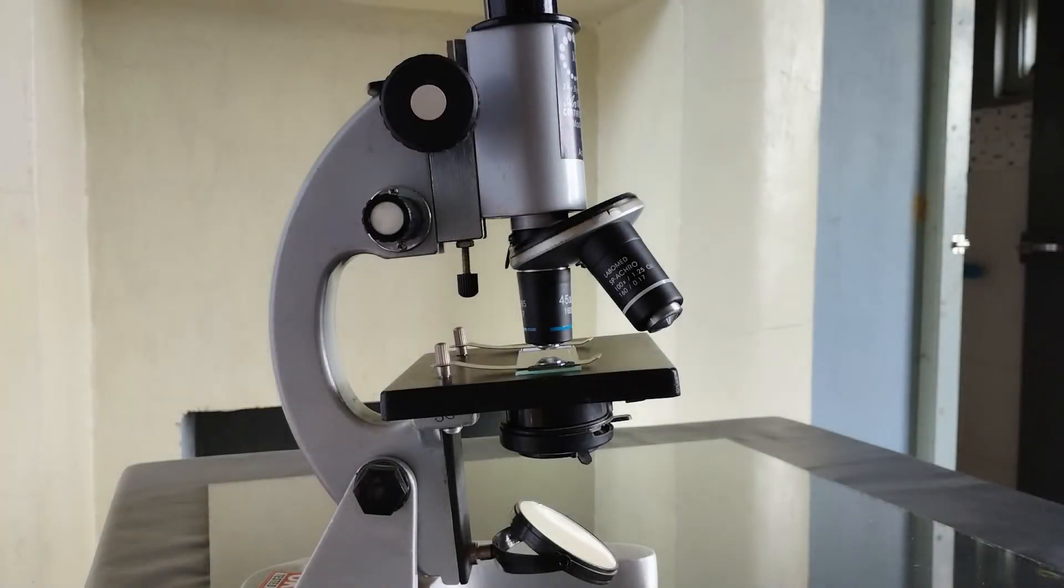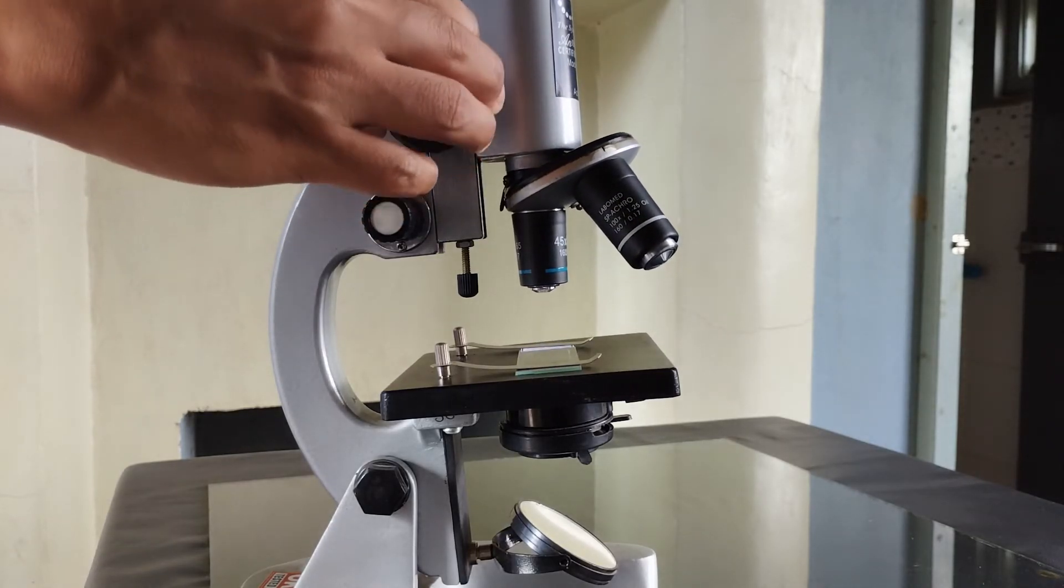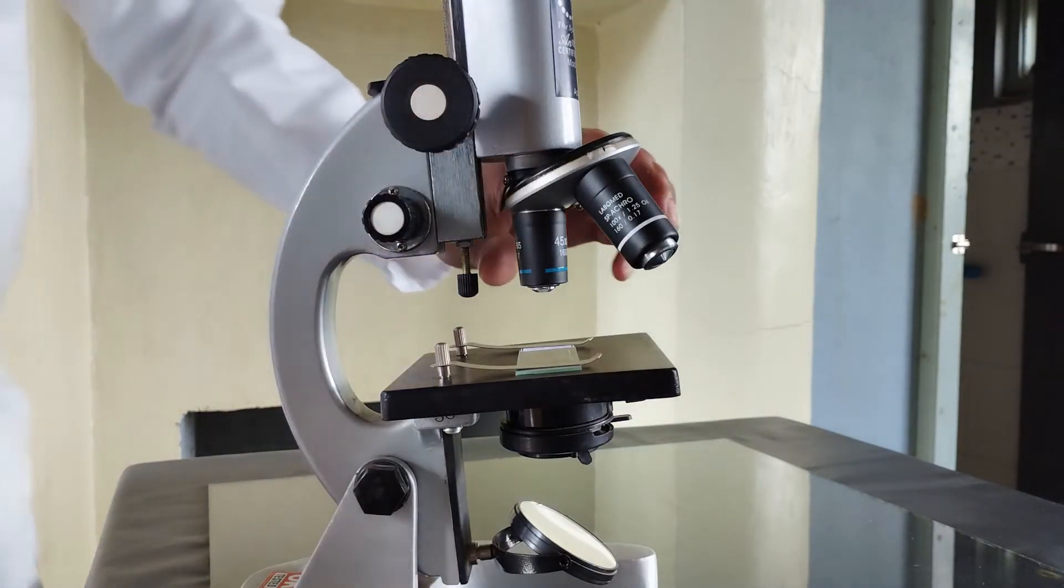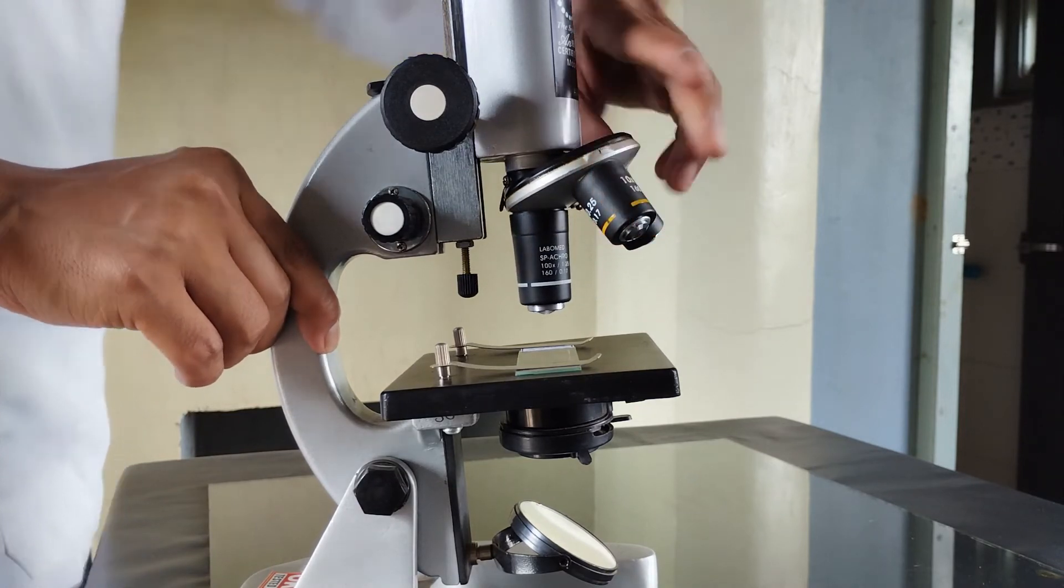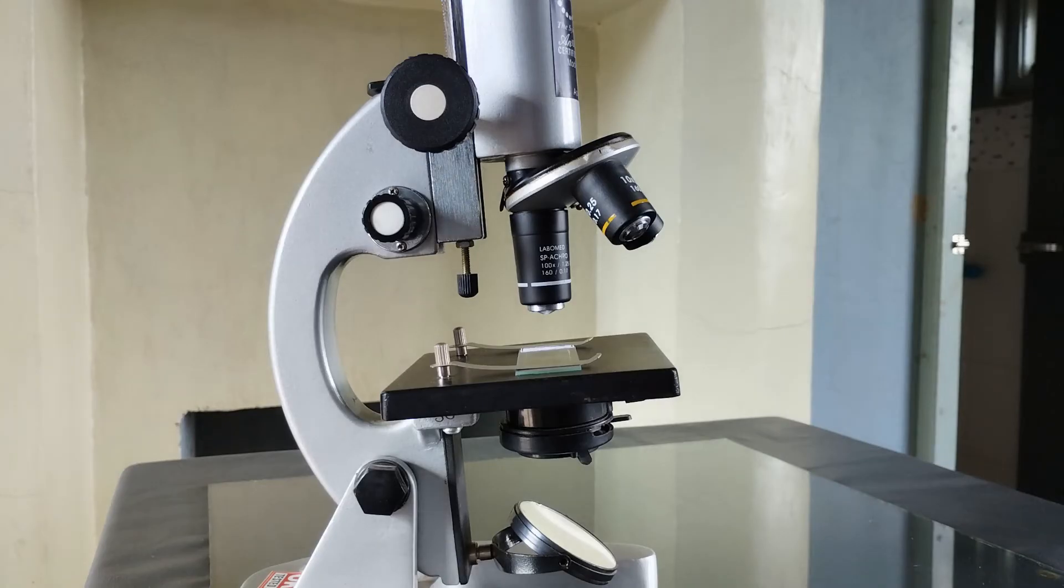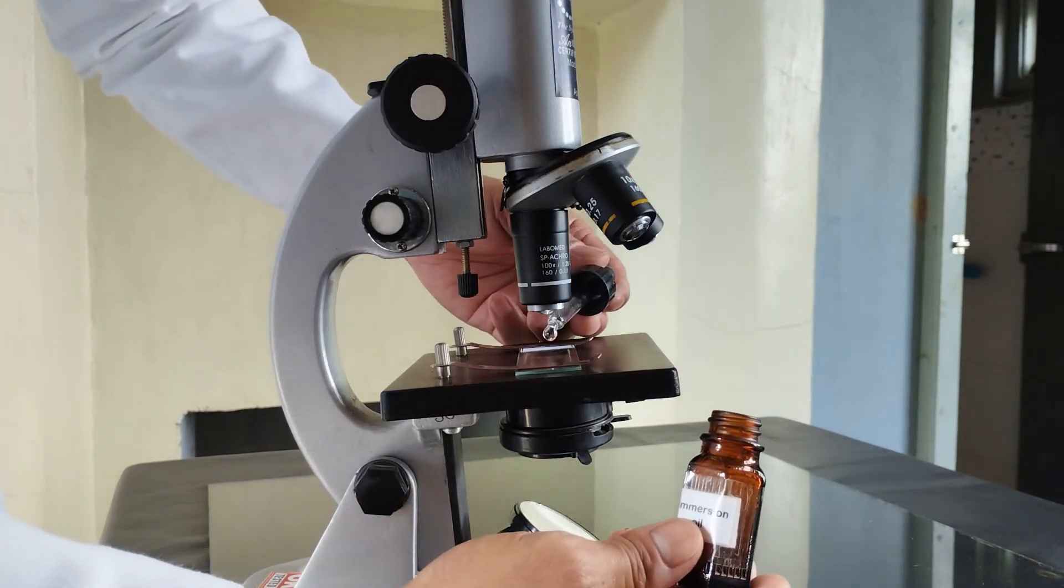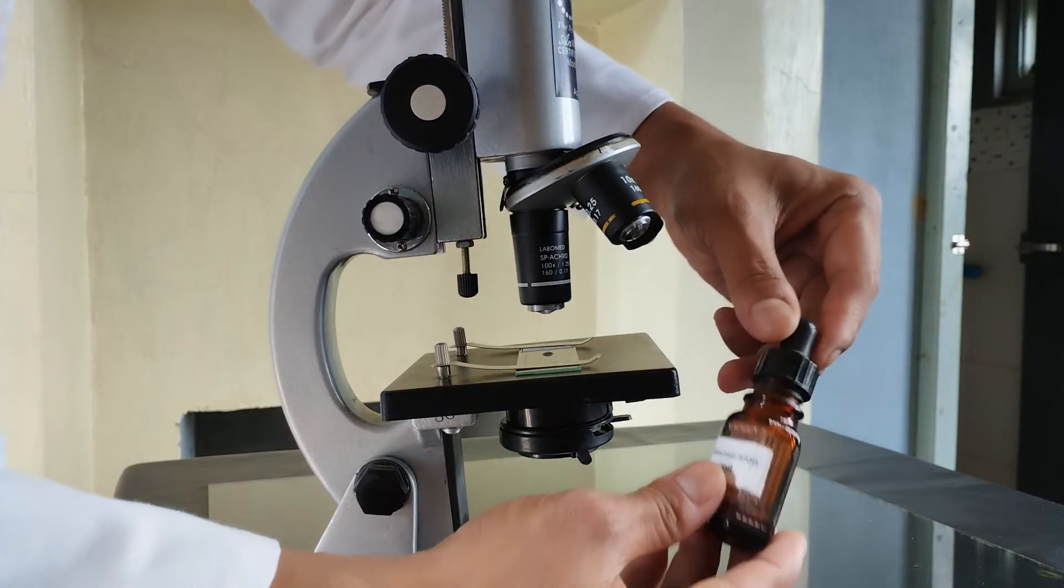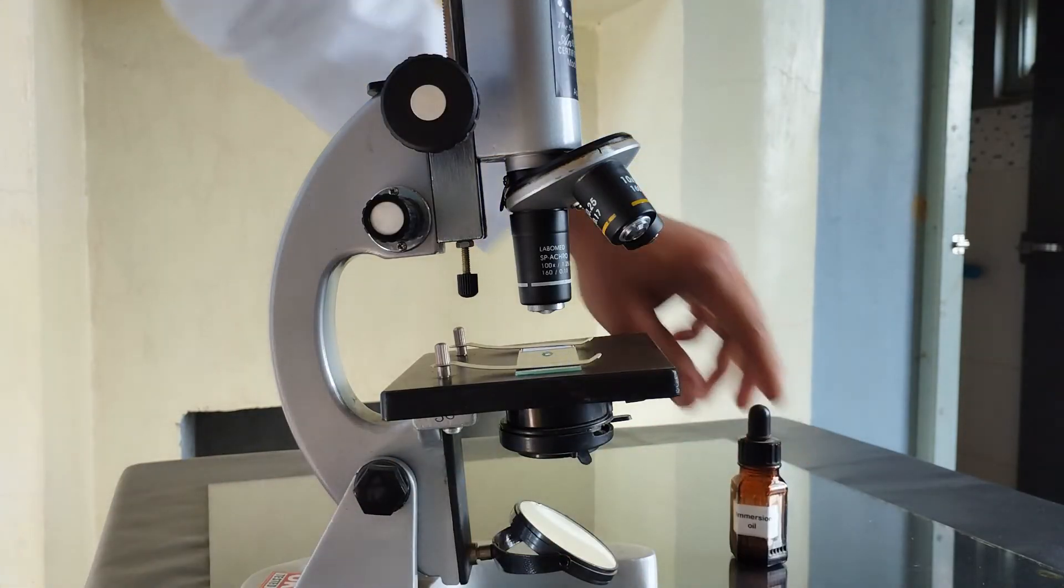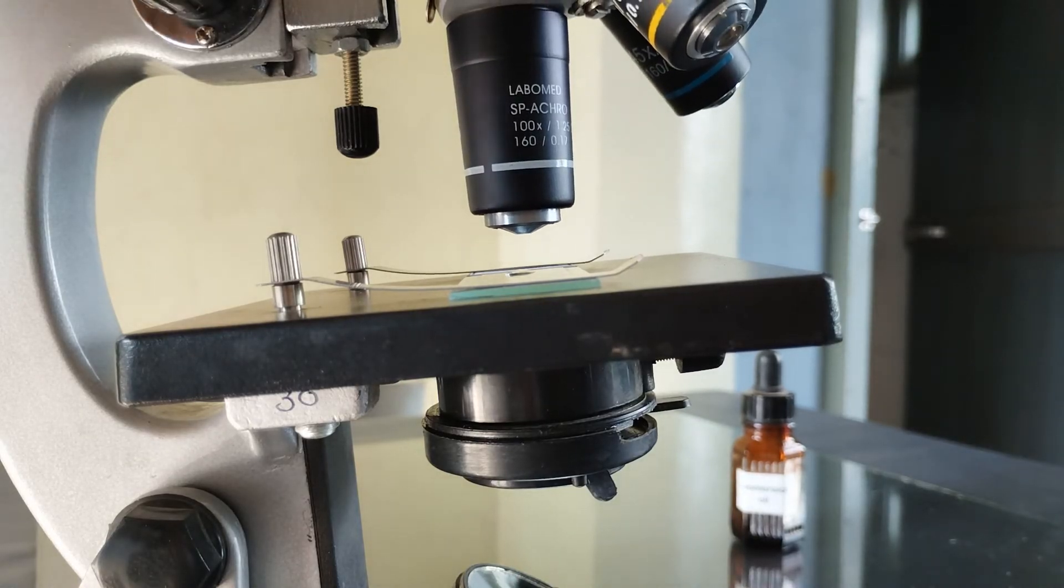In order to use the oil immersion objective lens, lift the body tube of the microscope fairly high up using the coarse adjustment knob, then rotate the nose piece until the 100x immersion lens aligns with the body tube and clicks into position. Place the permanent specimen slide onto the stage and center the specimen. Now place a drop of high refractive index immersion oil recommended by the microscope manufacturer to be used with their immersion objective.